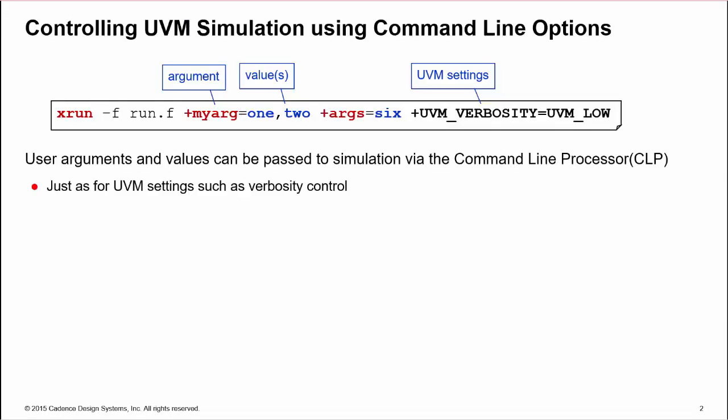We know we can set UVM simulation options, such as verbosity, via the command line, but we can use the same functionality to pass user-defined arguments and values.